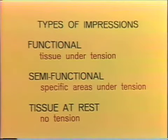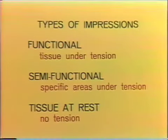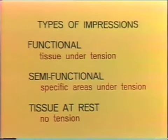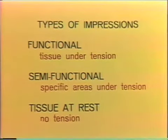The most common type of impression is the semi-functional impression. In this method, the tissues are recorded with some areas placed under tension while other areas are at normal rest. The third type is an impression taken with the tissues at rest, where advocates believe the tissues are under no tension whatsoever. An example of this type would be the mucostatic impression.